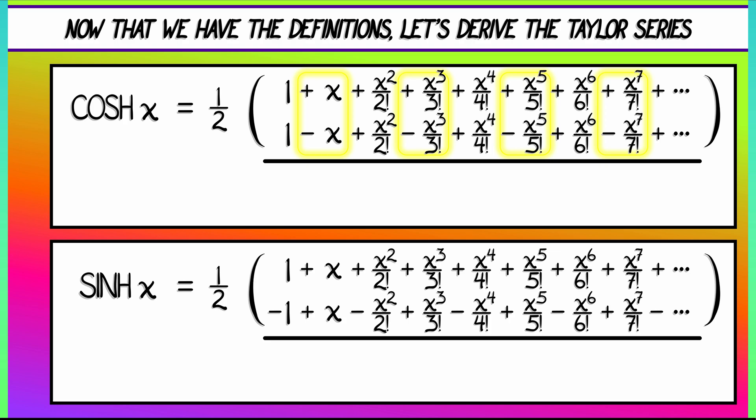So, in the end, we're left with 2 times quantity 1 plus x squared over 2 factorial, x to the 4th over 4 factorial. Keep going. And what we notice is that we are left with all of the even degree terms of the exponential series.